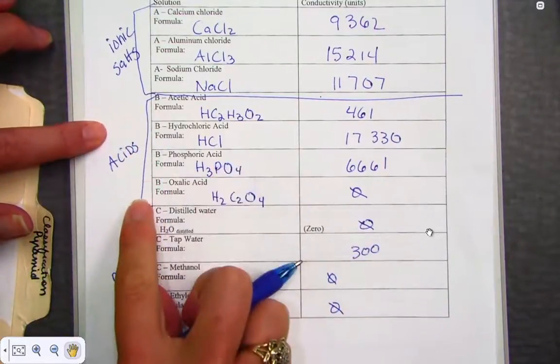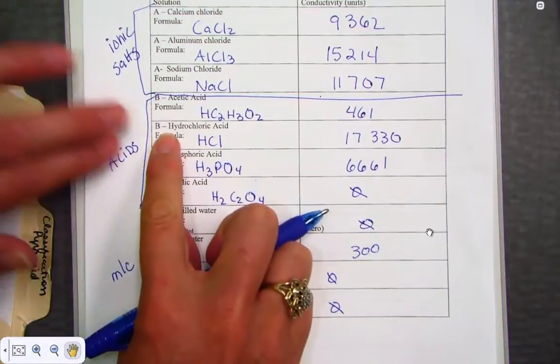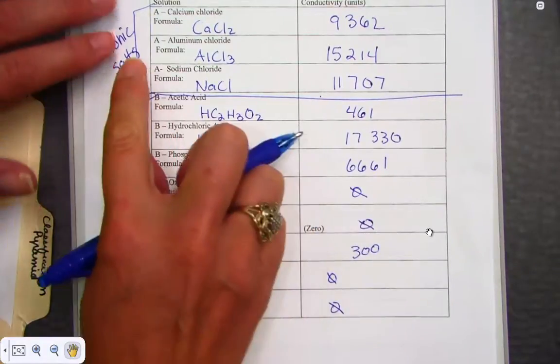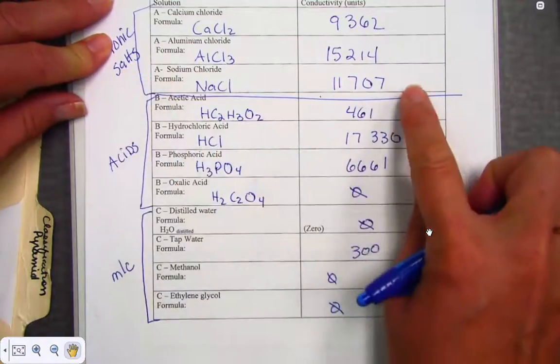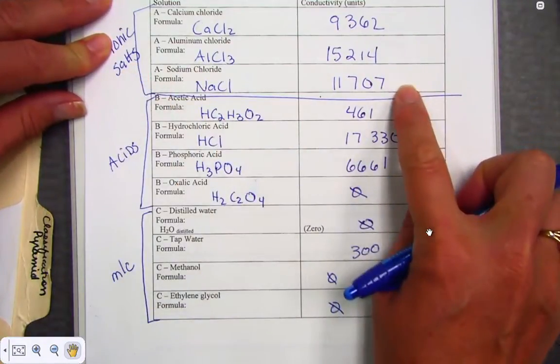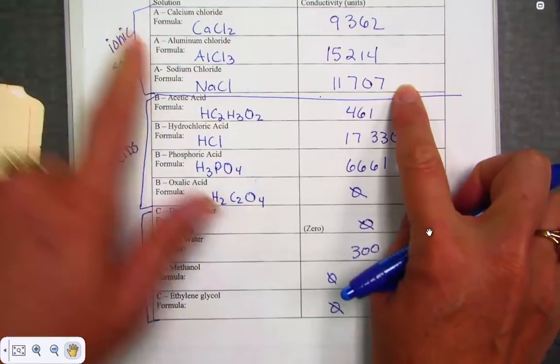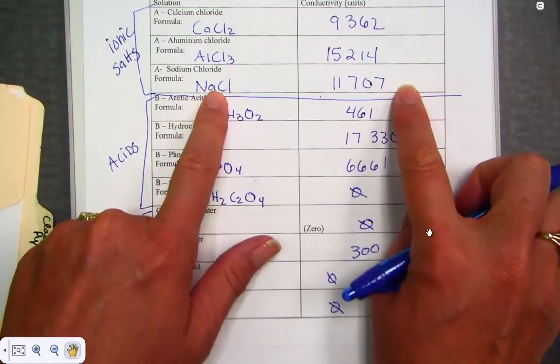We have acids that are either strong or weak. And up here, we have ionic compounds that are all strong electrolytes, and our numbers are verifying that as well. Interestingly enough, before I turn over and share some answers here,